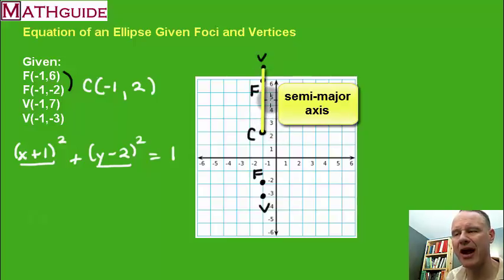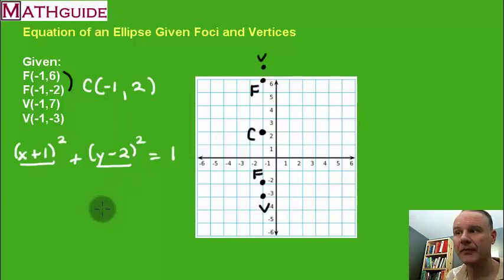So if you take the semi-major axis and square it, you're going to have one of these denominators. Which one is it? Well since I'm going vertical, that's got to be under the y because y is a vertical variable. So five squared is 25, it goes right there.